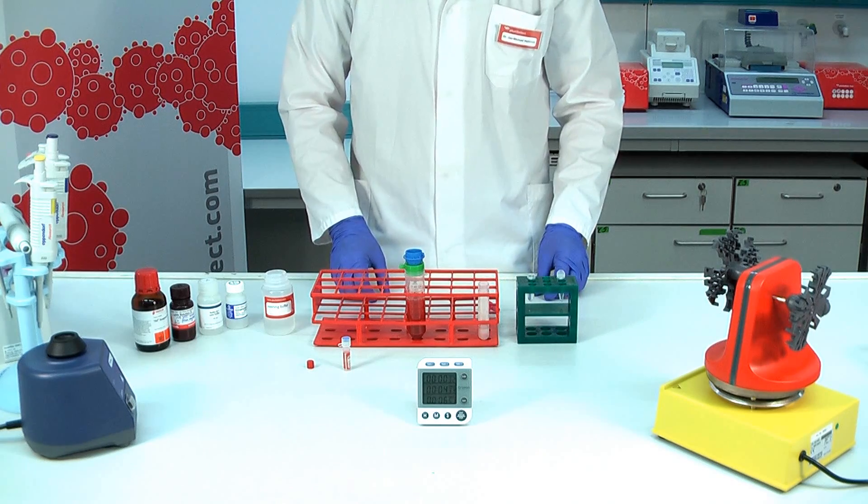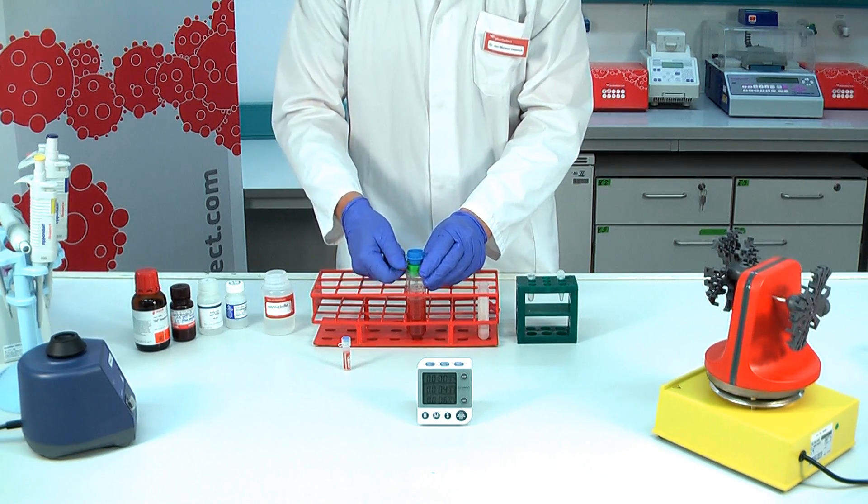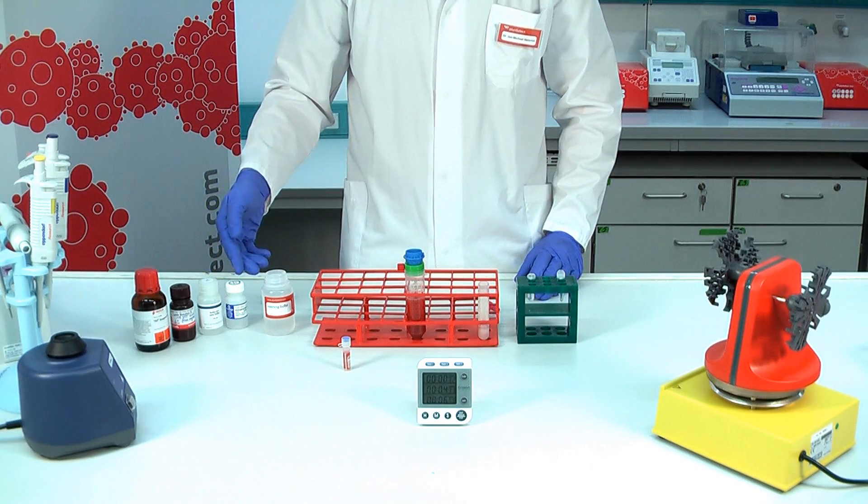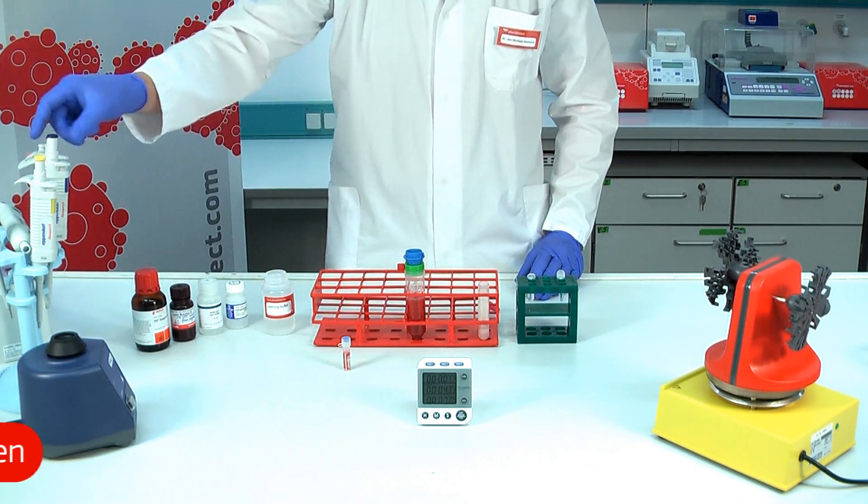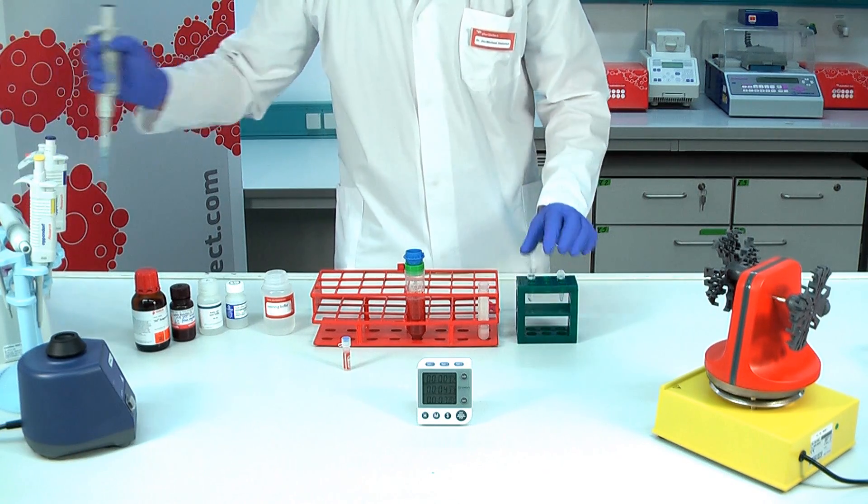After washing, close the luer lock. Here you can see four different buffers for lysing cells. For the presentation we choose the RLT buffer from QIAGEN, which already has been prepared in a small tube.